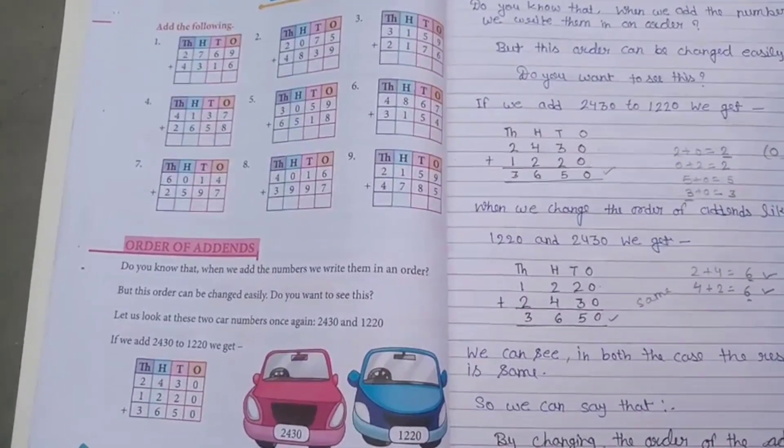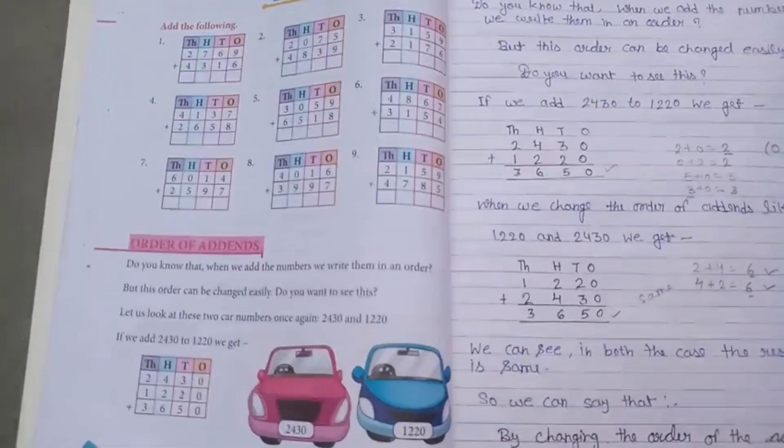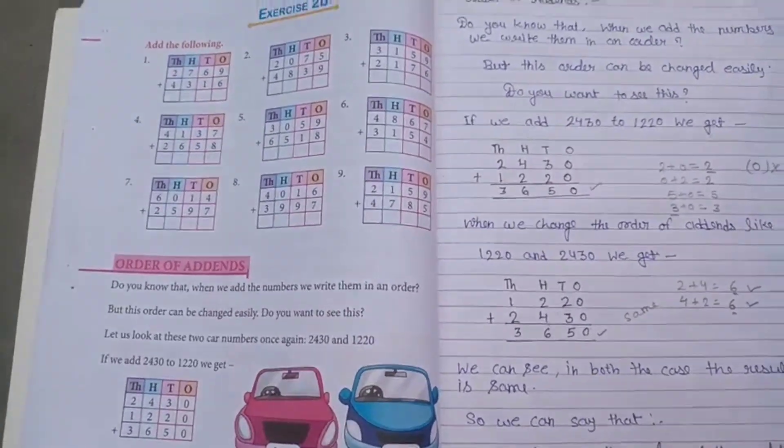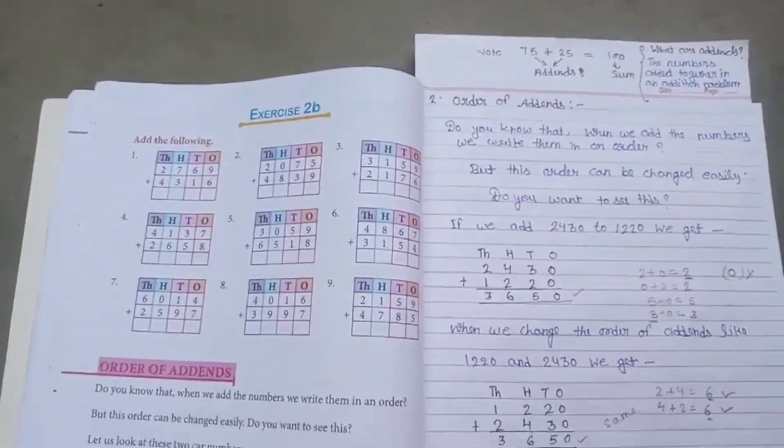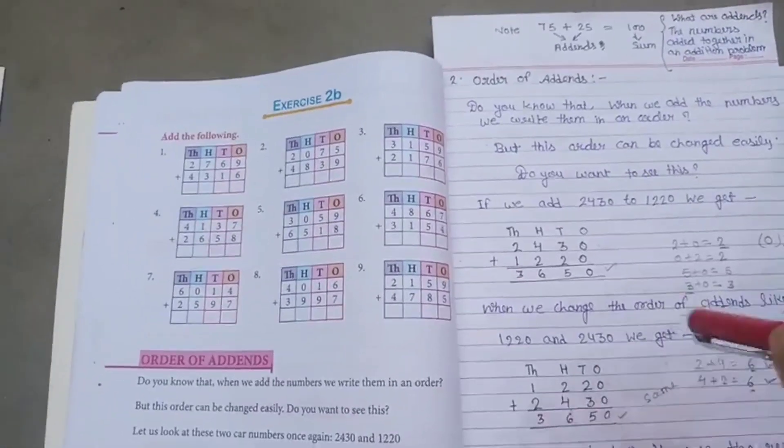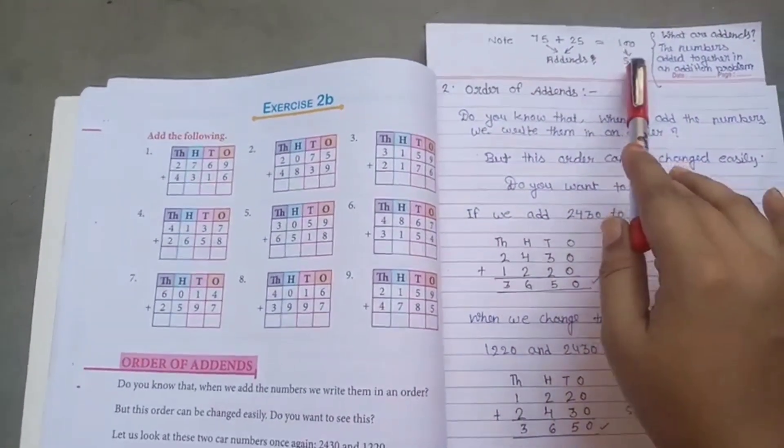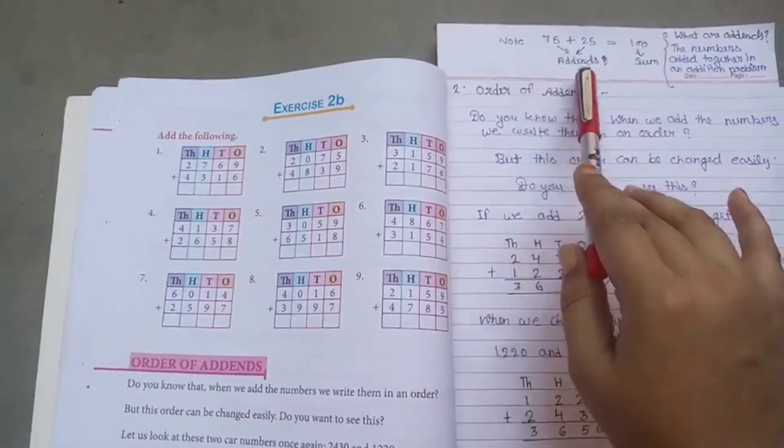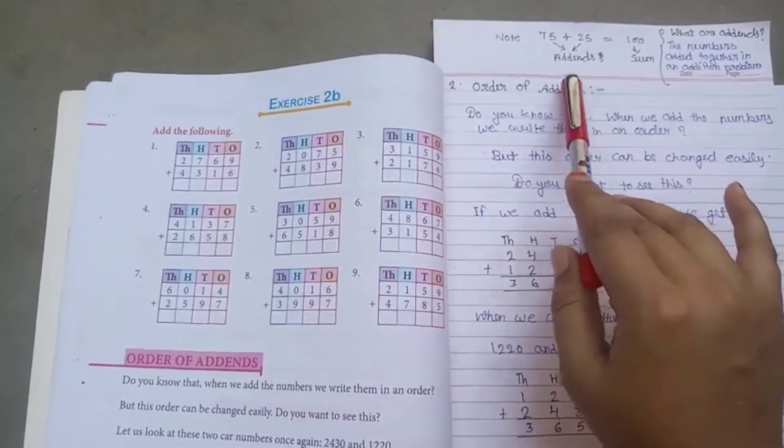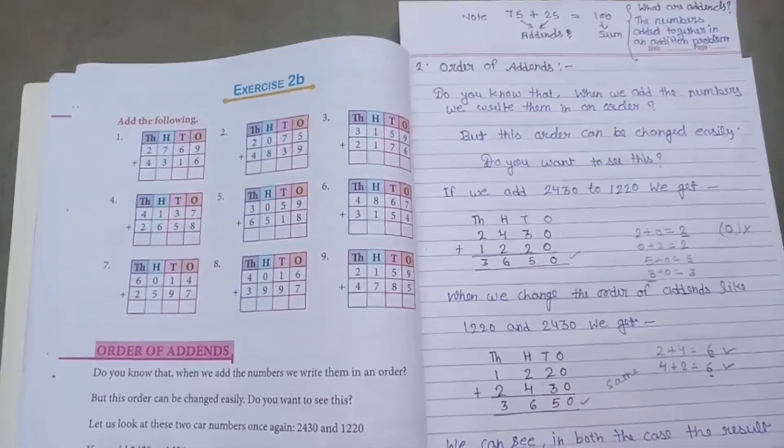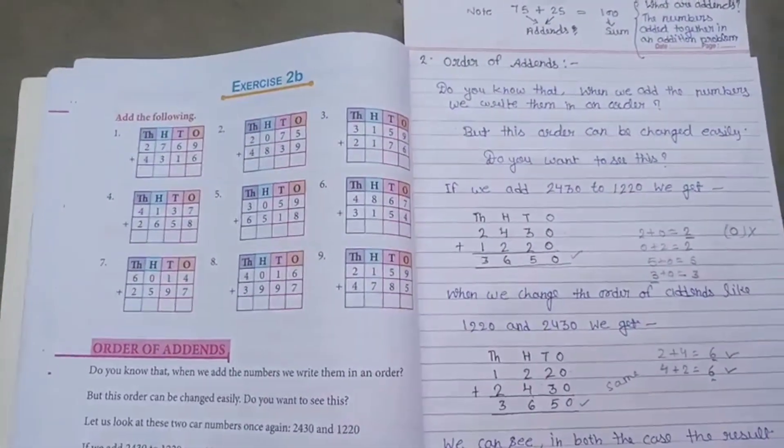What is addends? The numbers added together in an addition problem are called addends. Example: 75 plus 25 is equal to 100. These two numbers are called addends. Order of addends: do you know that when we add the numbers we write them in an order, but this order can be changed easily.